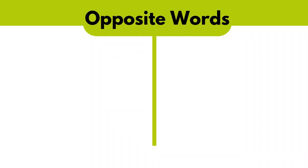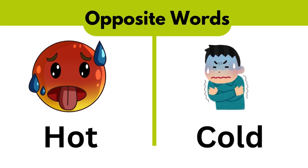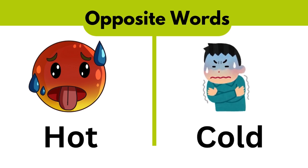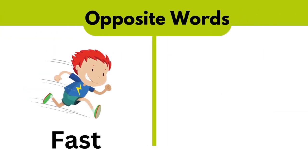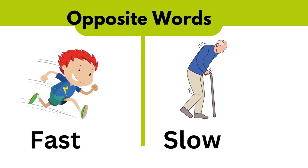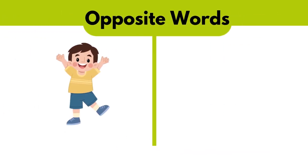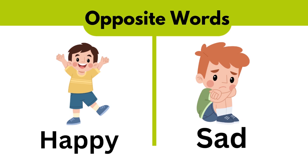Opposite words are words that mean the complete opposite of each other. For example: hot — cold. Fast — slow. Happy — sad.